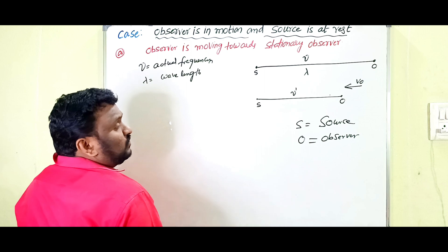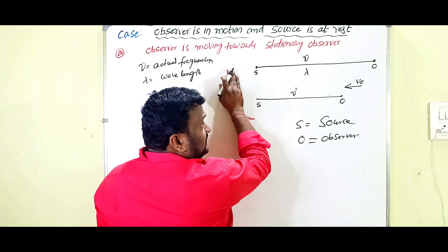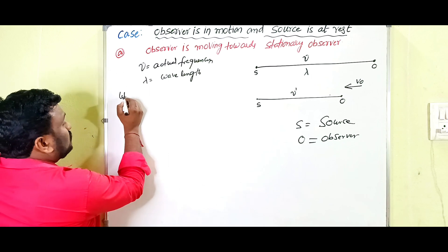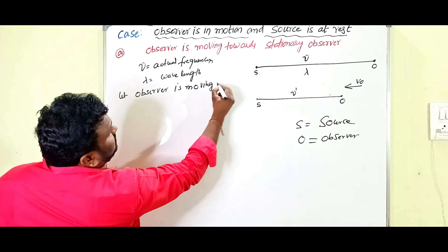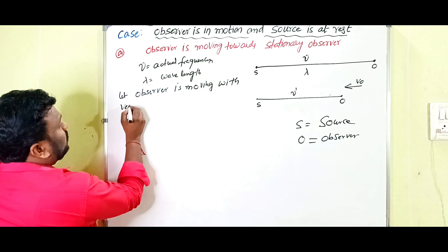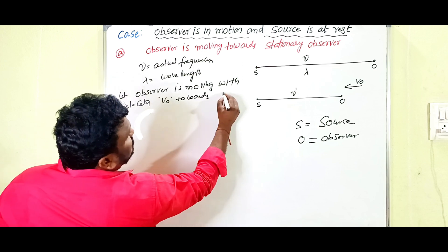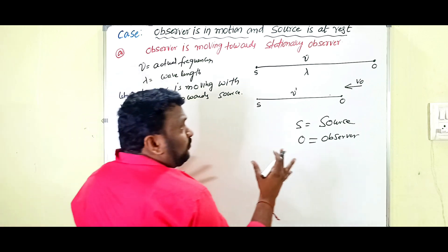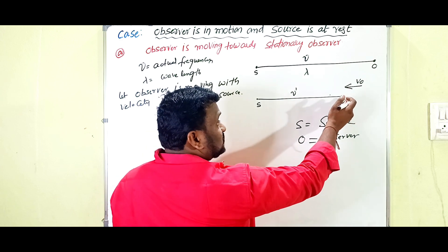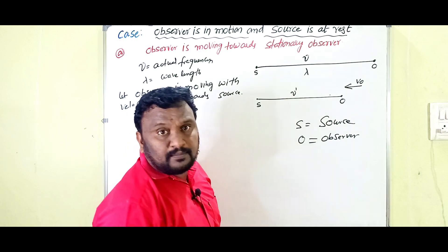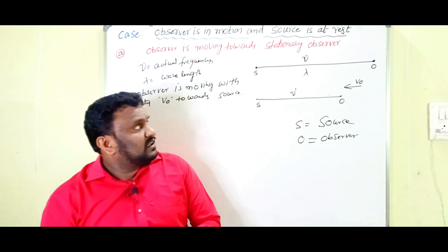After that, when the observer is moving towards the stationary source with velocity v₀, obviously the number of waves received by the observer will increase. What is frequency? The number of waves produced by the source per second is called frequency. When both source and observer are at rest, the observer receives a certain number of waves — say 1000 waves.